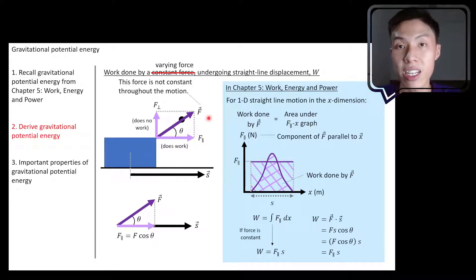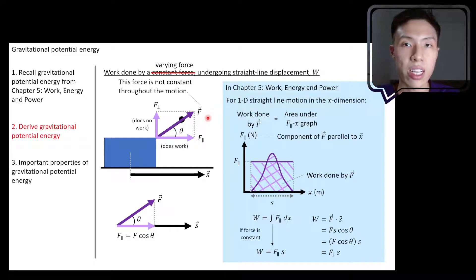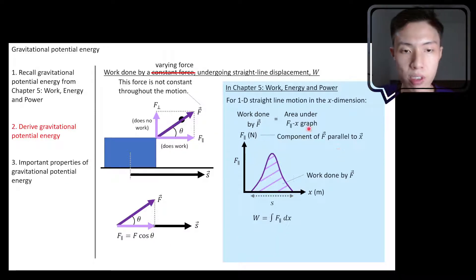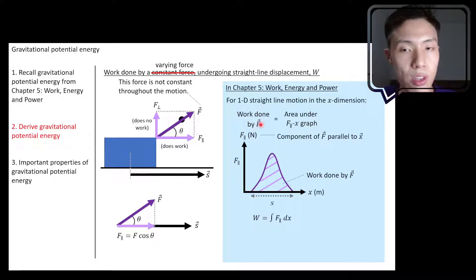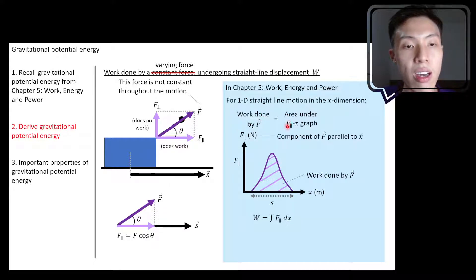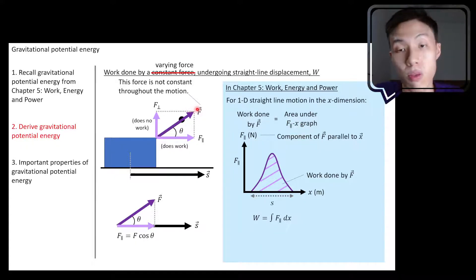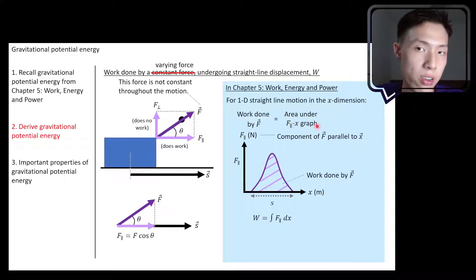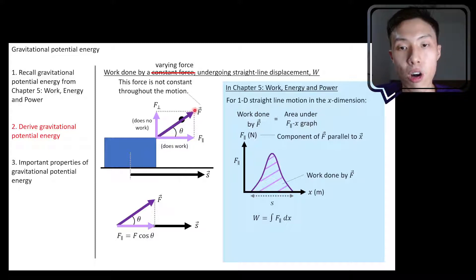I'll be using a slide from chapter 5 — you can refer to the link shown on screen if needed. The work done by a force that is changing through the journey can be determined by finding the area under the F-parallel vs. X graph. The force here might be pointing in any direction, but when finding the area, it must be the component of force parallel to X, where X represents position.